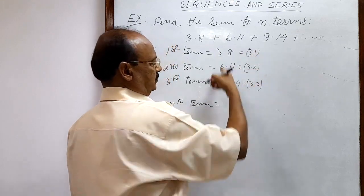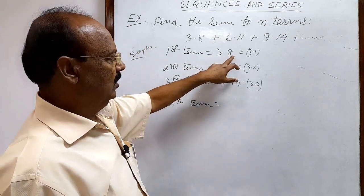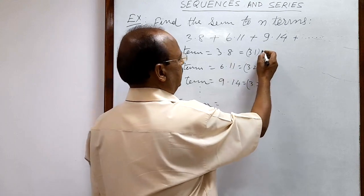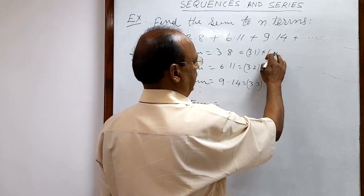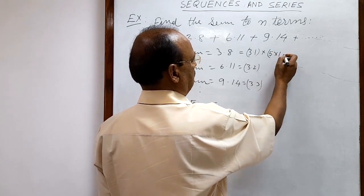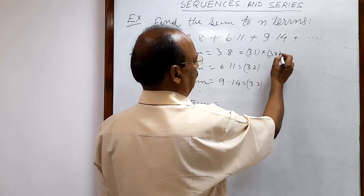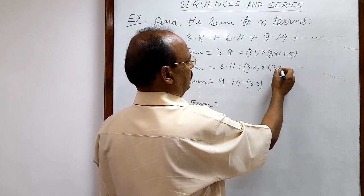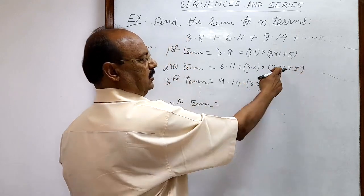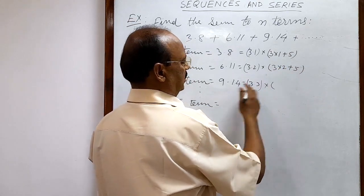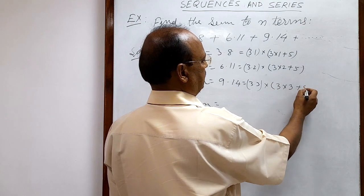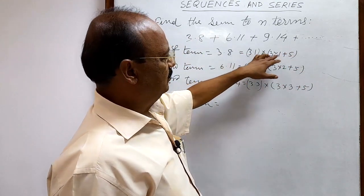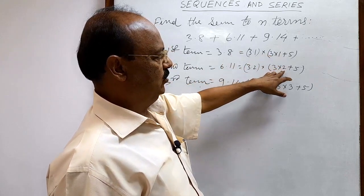The first factor is 3, 6, 9 and the second factor is 8, 11, 14. For the second factor: 8 can be written as 3×1 + 5, 11 is 3×2 + 5, and 14 is 3×3 + 5. So the factor 3 and the constant 5 are common everywhere; only the term number changes: 1, 2, 3.